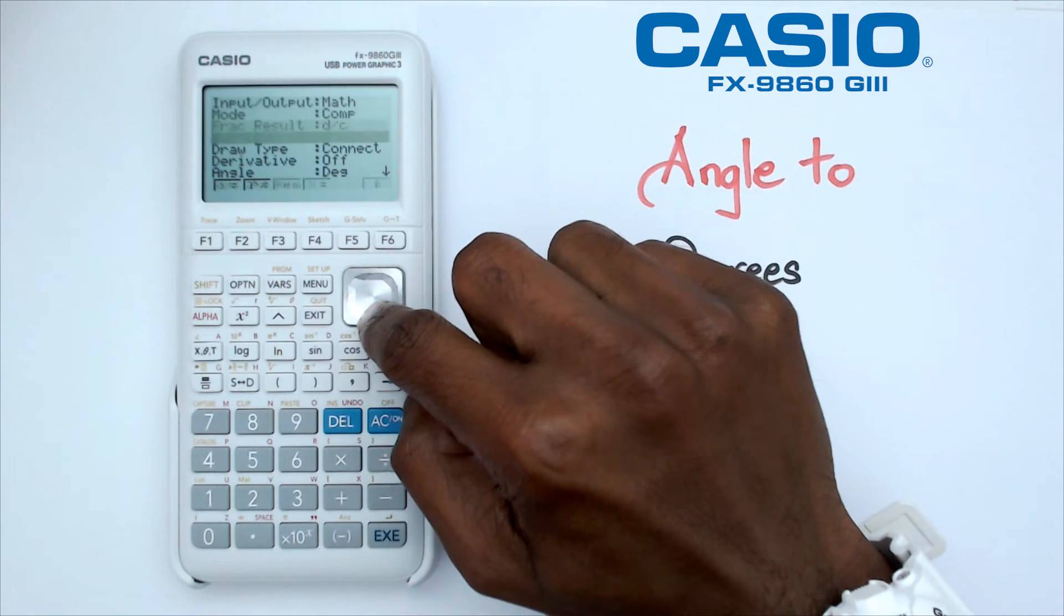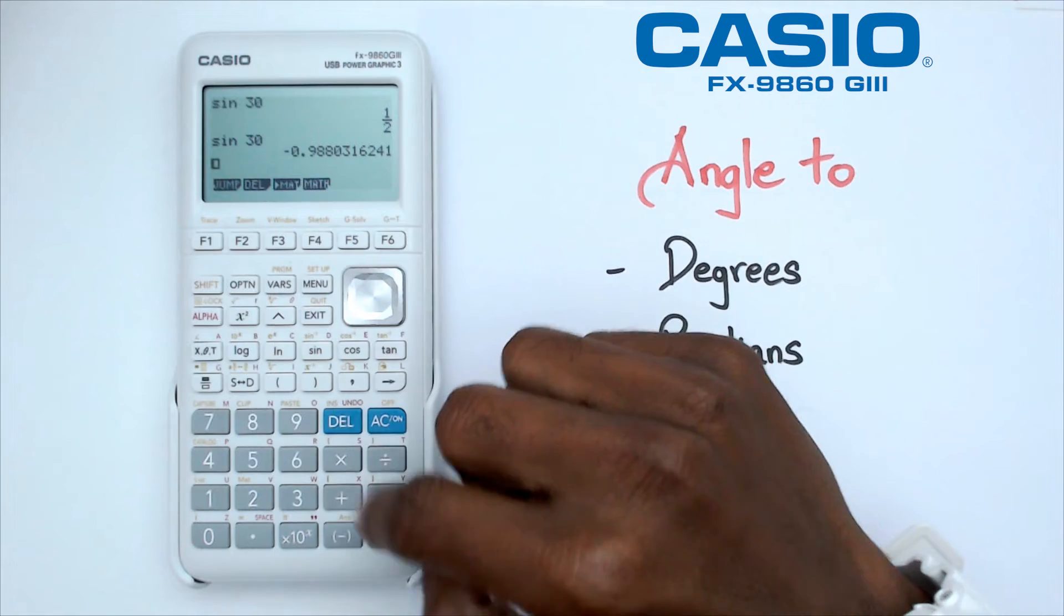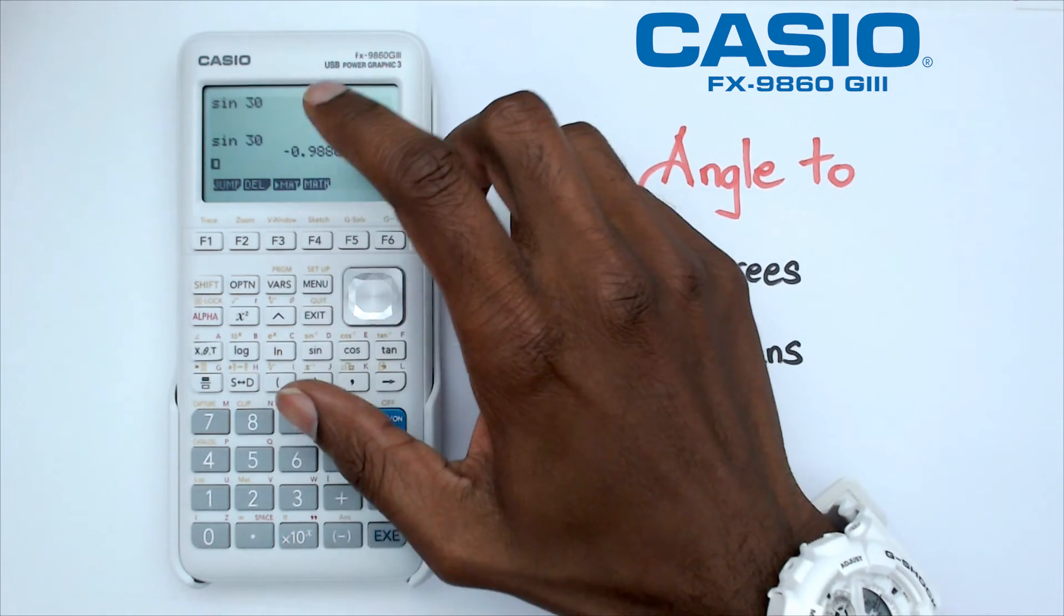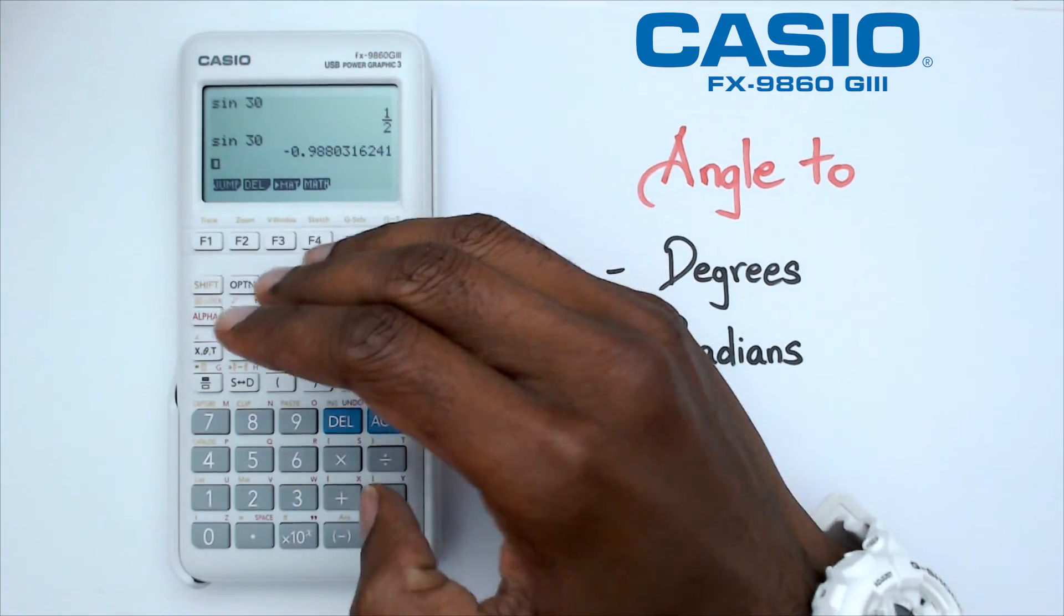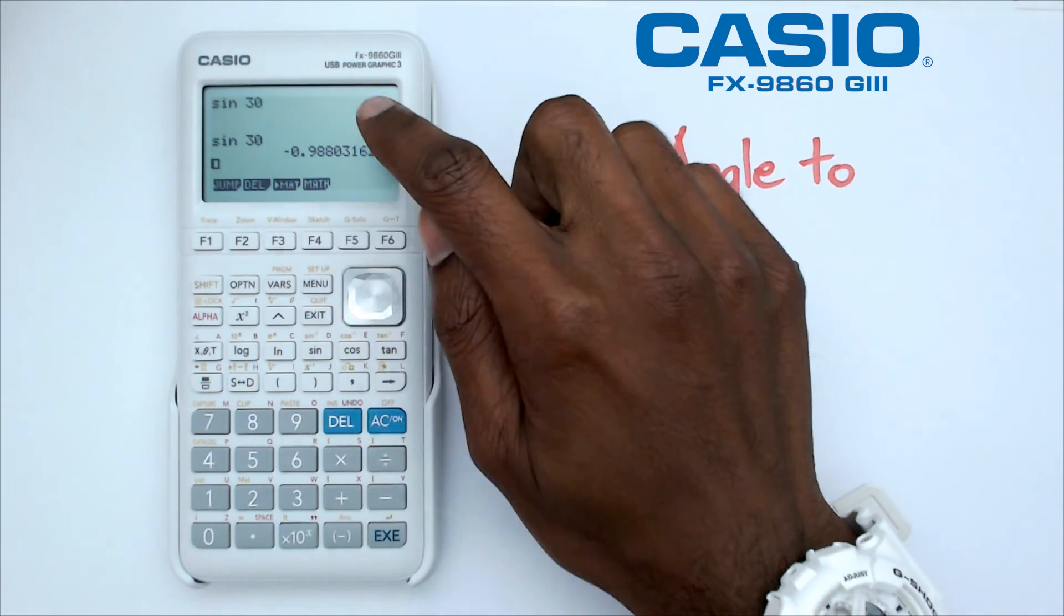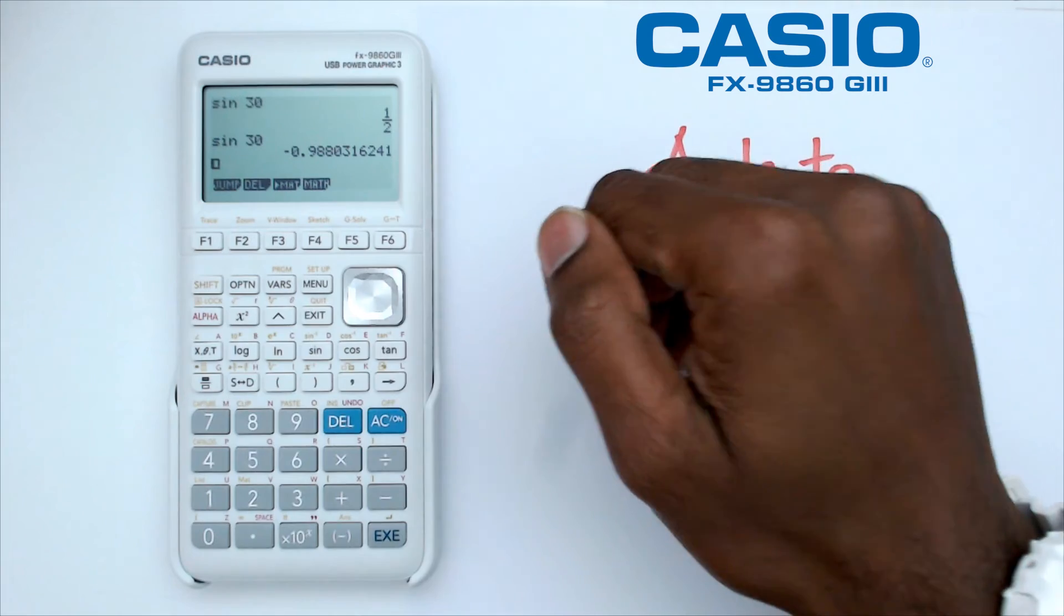Because if it was in radians mode, let's say we go sine 30, what will happen is you're going to end up with this ugly looking number. So I always suggest to folks that to do a quick check whether your calculator is in degrees or radians, always remember that sine 30 is equal to half, because that will give you an indication whether your calculator is in degrees or radians mode.